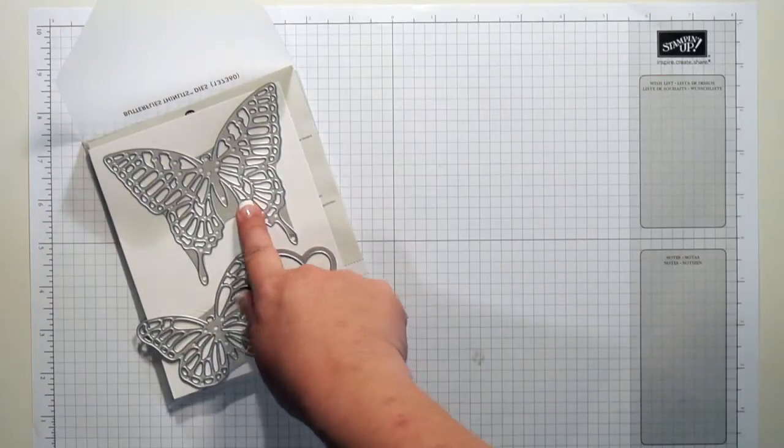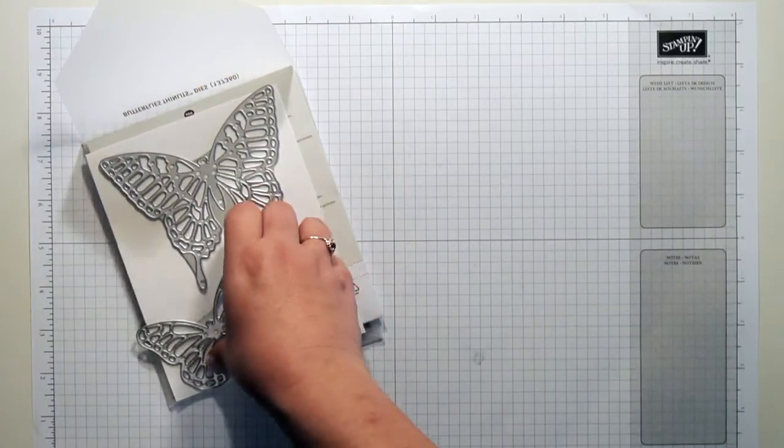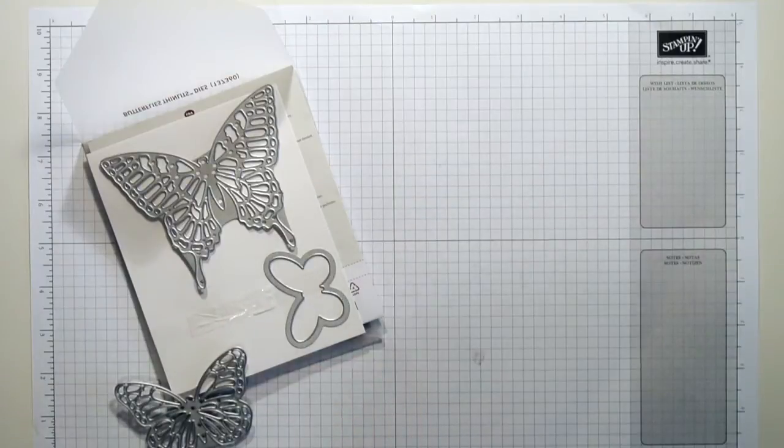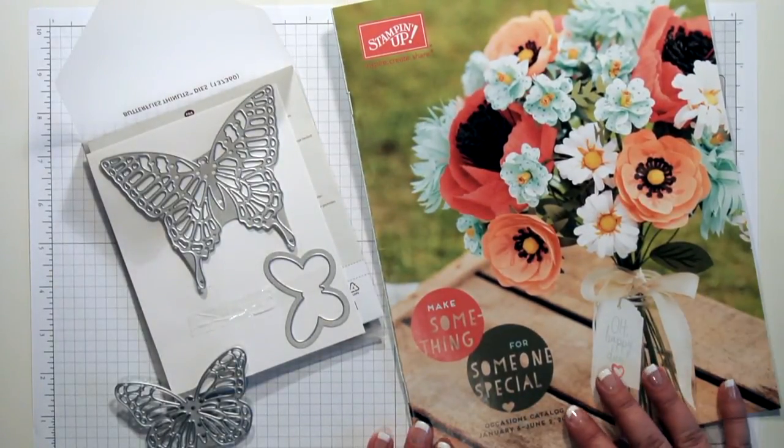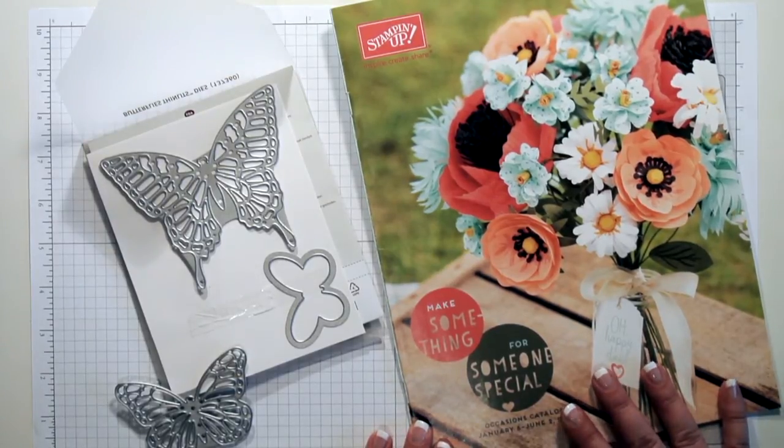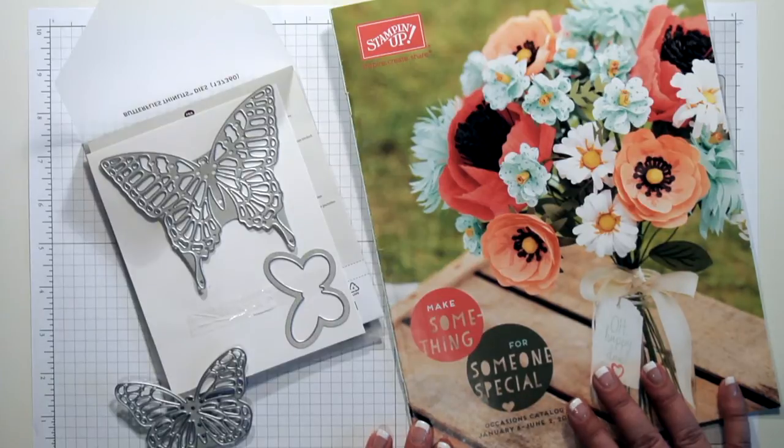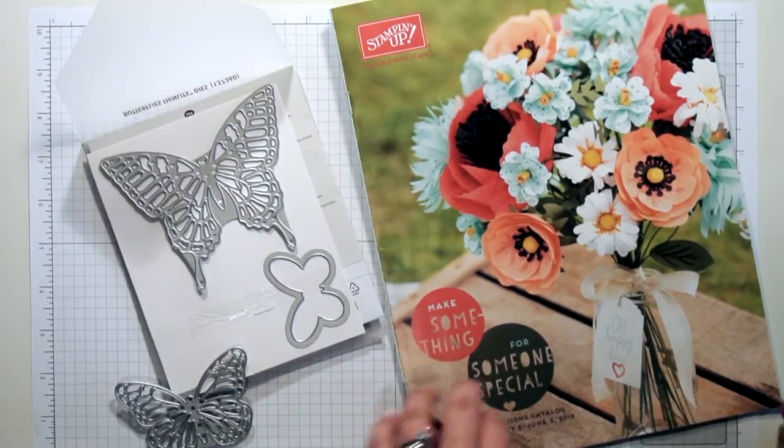You can see here it comes with a larger image, a middle image, and a smaller image. This is the one we're going to use today. I want to show you the butterfly thinlit dies that come in the Stampin' Up occasions catalog. Now if you don't have this catalog yet, leave me a comment below or head over to my blog and let me know. I'll be sure to drop one in the mail to you.